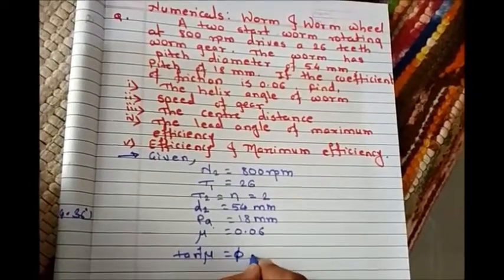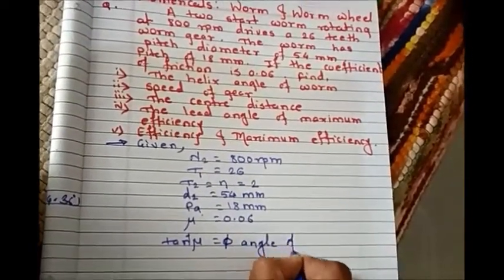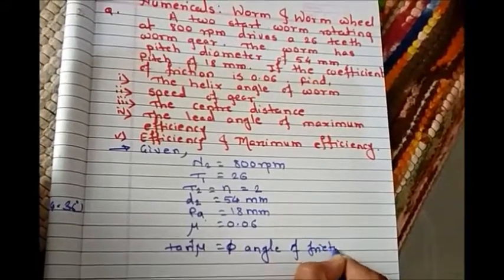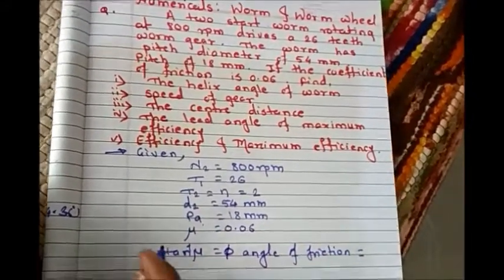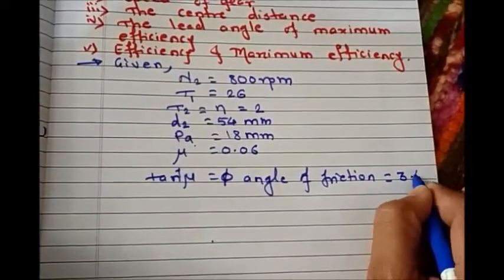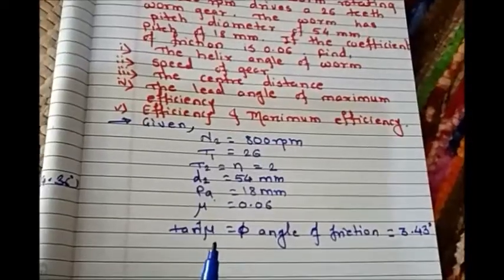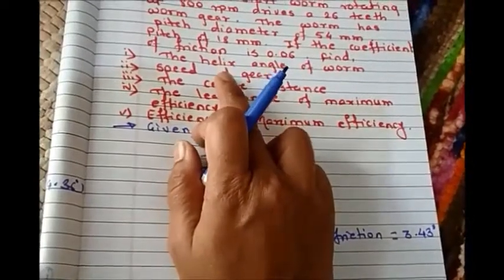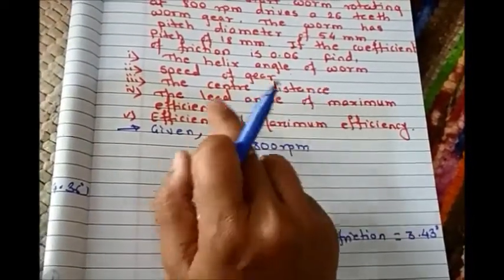Here phi, the angle of friction, equals 3.43 degrees. They ask: find helix angle, speed of gear, center distance, lead angle for maximum efficiency, and efficiency and maximum coefficient.